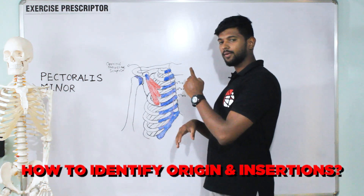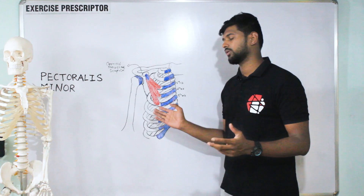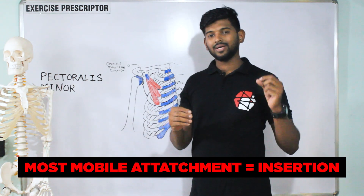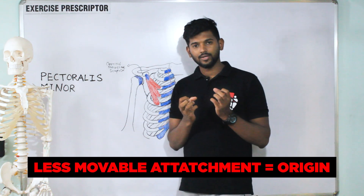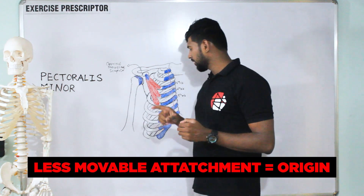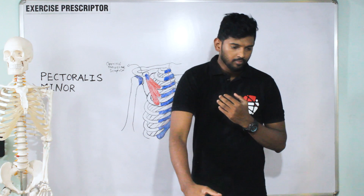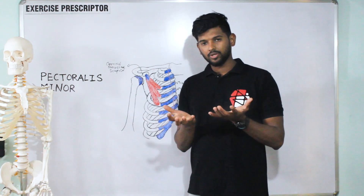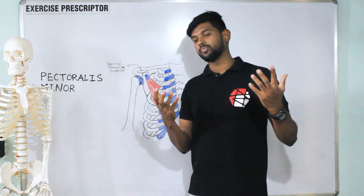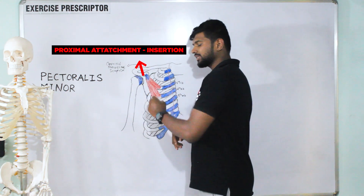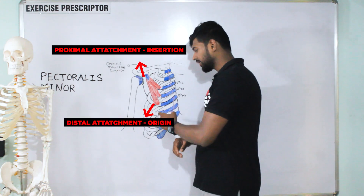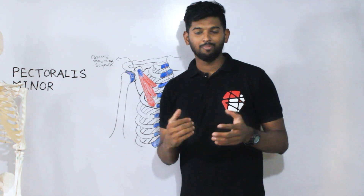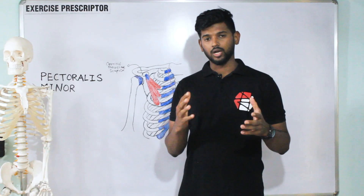Finally, answering the question of how to identify the origin and insertion for this muscle: the most mobile attachment is called the insertion, and the less movable attachment is called the origin. We most frequently use the arm, so the proximal attachment — the coracoid process — is the insertion. The distal attachment — the ribs — is used less frequently, mainly during deep breathing, so the distal attachment is the origin.